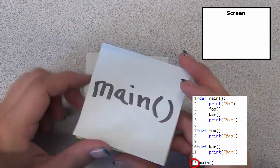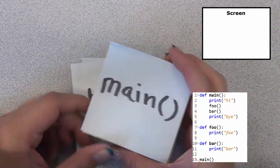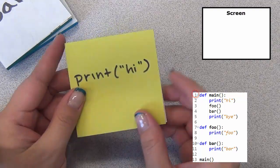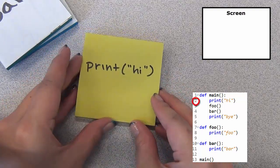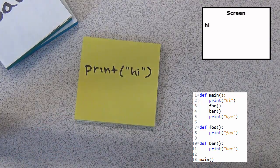Due to the statement on line 13, we start with main. The first line in main is print high. The computer proceeds to print high to the screen.